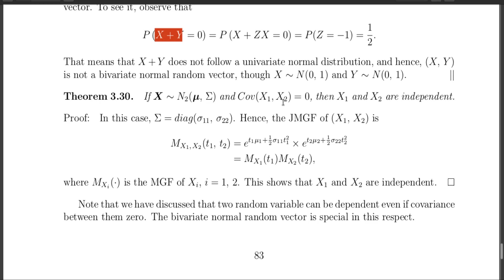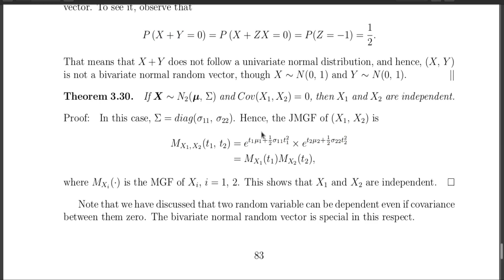The proof follows from the moment generating function. When covariance is 0, the sigma matrix is diagonal with diagonal elements sigma-1-1 and sigma-2-2. In this case, the joint MGF of (X1, X2) at the point (T1, T2) factors into the product of two terms — one is the MGF of a Normal(mu1, sigma-1-1) and the other is the MGF of a Normal(mu2, sigma-2-2). Since the joint MGF equals the product of the marginal MGFs, X1 and X2 are independent.